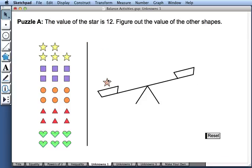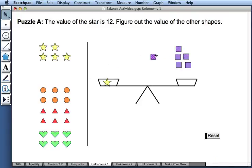So if I drag a star onto one side, let's say I now start to drag some squares onto the other. One, two, three, four, five, and six. And I see that six squares balance one star.